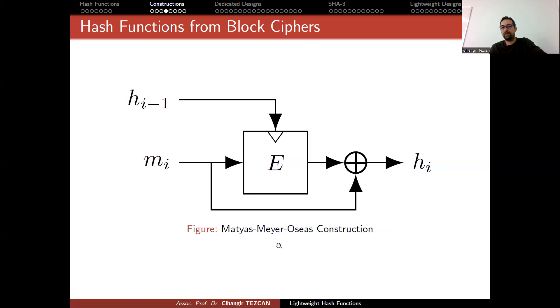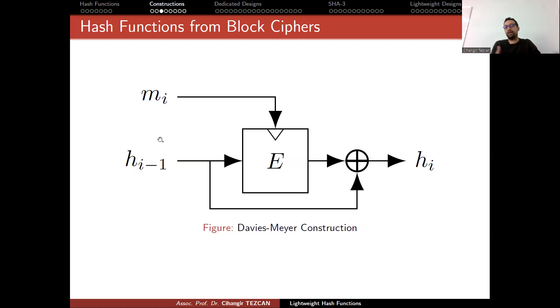Let's move on to Matyas-Meyer-Oseas construction. You might say that this picture is the same as the previous one. And yes, it is the same, but the places of the plaintext and the secret key are swapped. Of course, here now I don't have the secret key. So let's actually, we haven't seen the Merkle-Damgard construction, so maybe some of these definitions might not make sense. But what I'm trying to hear, recall that hash functions don't use a secret key. So you provide the input and obtain an output, right?